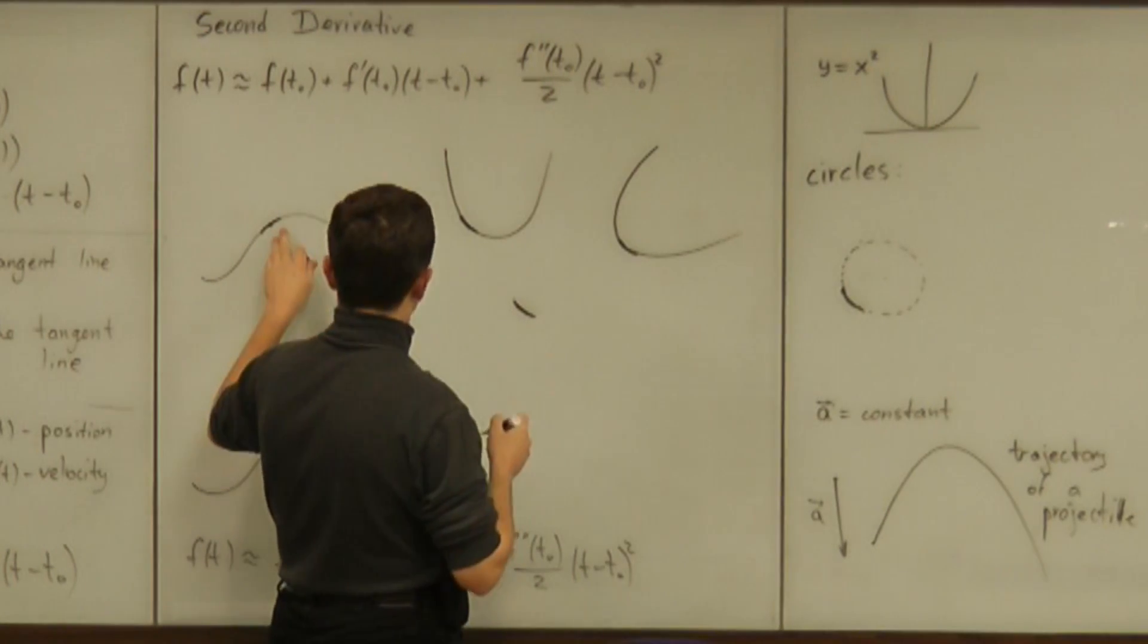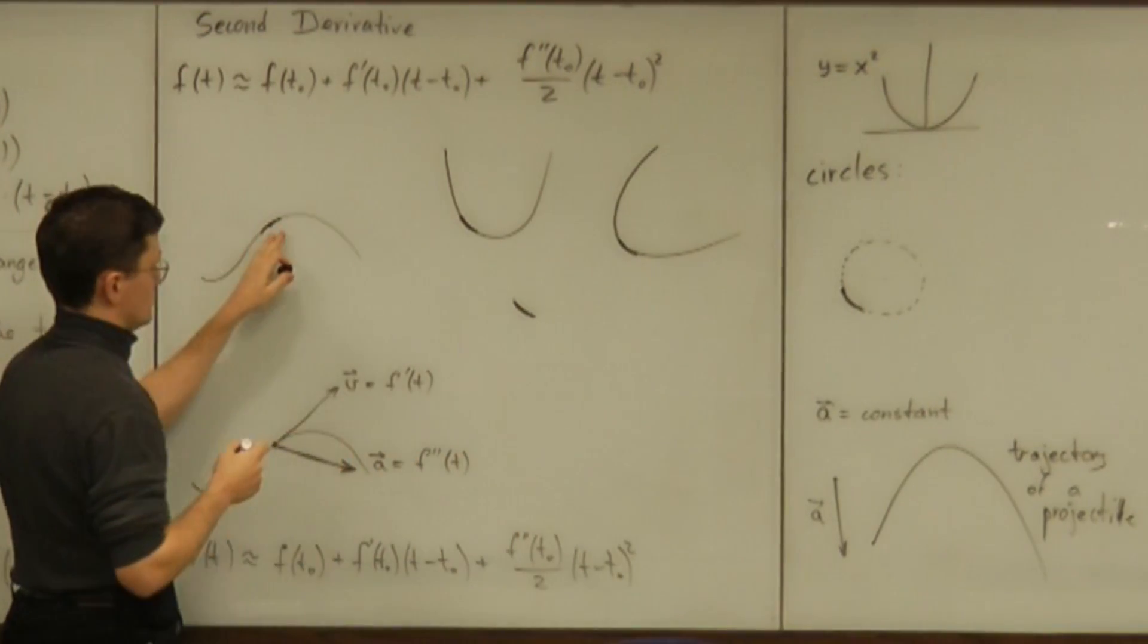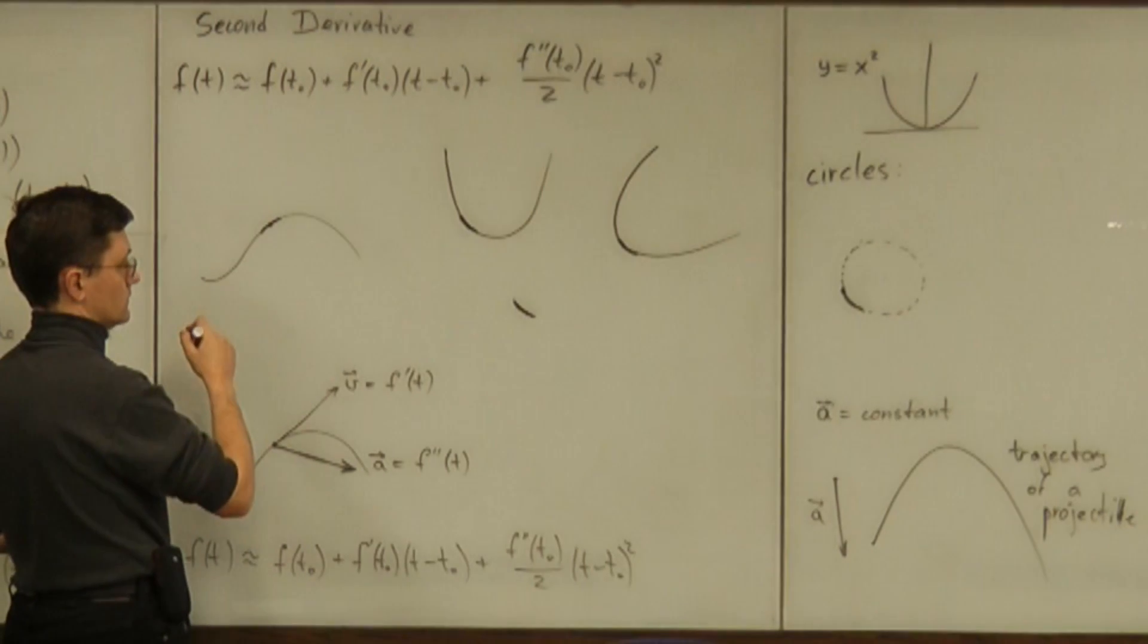So what we can approximate any curve locally by geometrically is a circle.